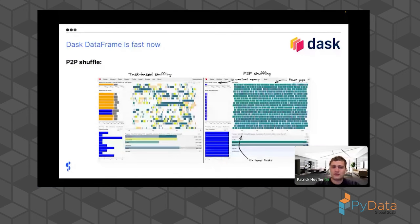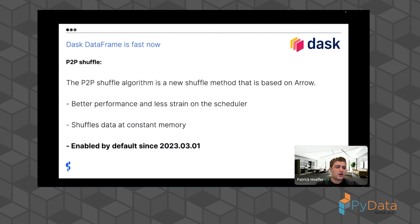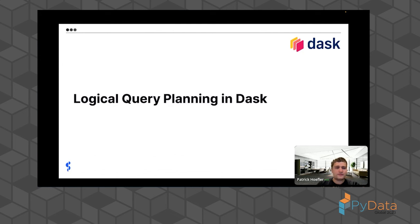The new shuffle algorithm shuffles at constant memory — no huge increase even if your dataset is huge. If you have a 10 terabyte dataset, you can process it with 500 gigabytes of memory because you never have to hold the whole dataset in memory. We've run benchmarks with 30 workers processing a 10 terabyte dataset — that wouldn't have been possible before. Constant memory shuffling and less scheduler strain are huge improvements, and stability is what distributed dask users care about most. It's been on by default since March.